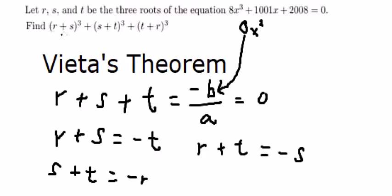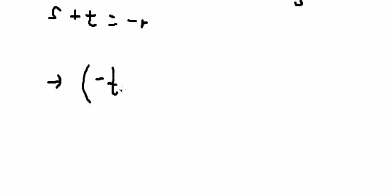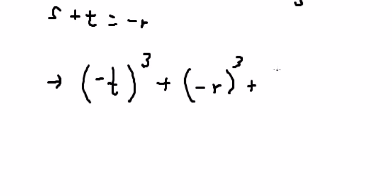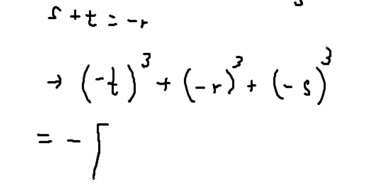So we substitute: R plus S becomes negative T, S plus T becomes negative R, and T plus R becomes negative S. That gives us negative T to the power of 3, and negative S to the power of 3. We factor out the negative, giving T³ plus R³ plus S³.